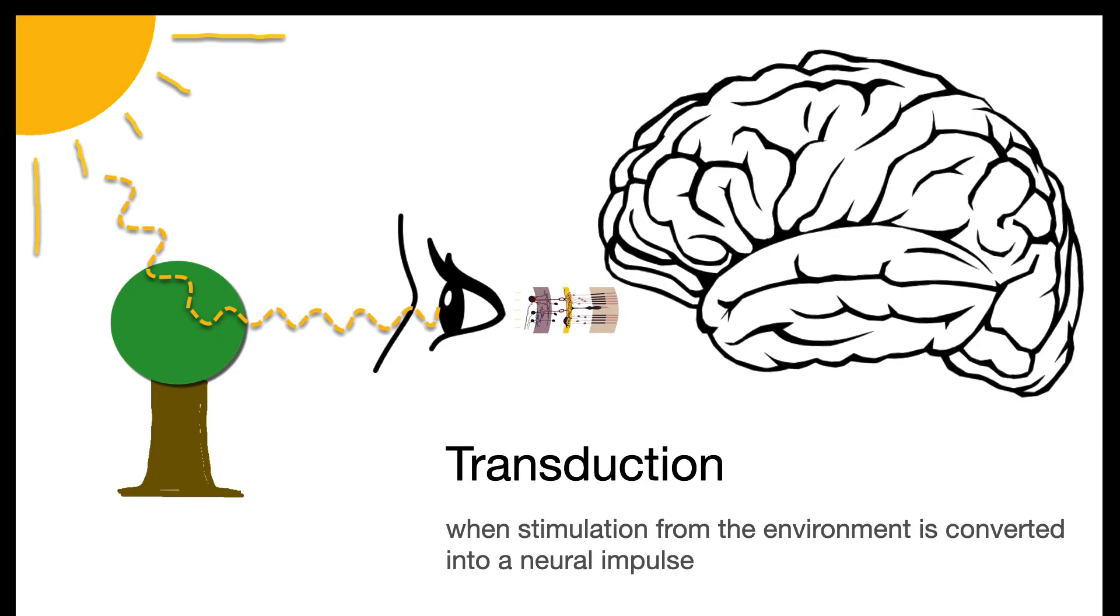Transduction is when stimulation from the environment is converted into a neural impulse. For the sense of vision, transduction is when light stimulation reaches the receptor cells in the back of the eye and the absorption of light by those photoreceptive cells causes them to send an electrical impulse to the rest of the brain.